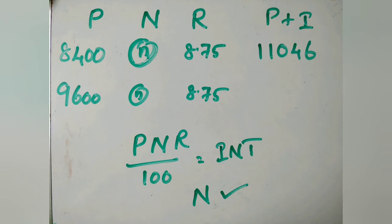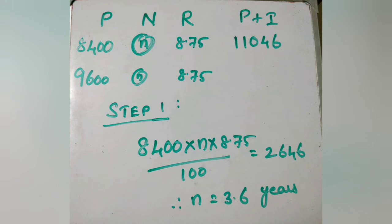To solve this question, we use the simple interest formula: PNR/100 equals interest. We know all values except n. Substitute the values: 8,400 × n × 8.75 / 100 equals 2,646. By substituting, we get n equals 3.6 years.